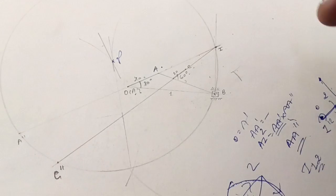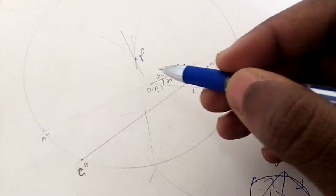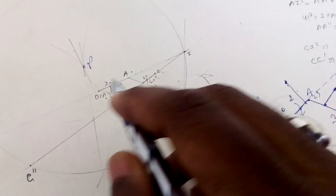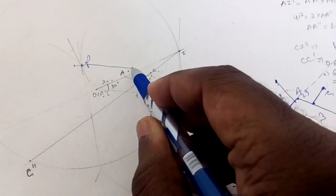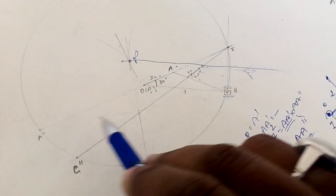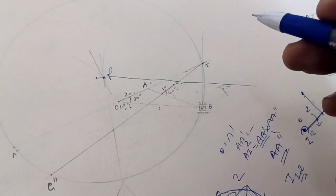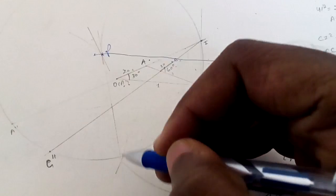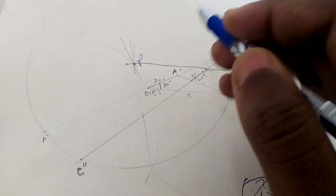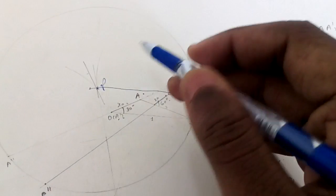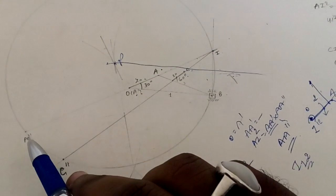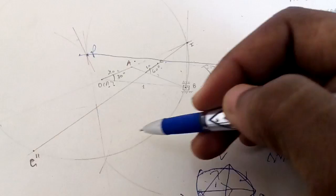To repeat: join I and B, make the perpendicular bisector of IB. Then join A-double-dash and I (or A-double-dash and B) and take that perpendicular bisector. Where the two perpendicular bisectors intersect is point P, the inflection pole. Take radius A-double-dash–P and draw the circle — it will pass through A-double-dash, B, and I. Your inflection circle is now complete.